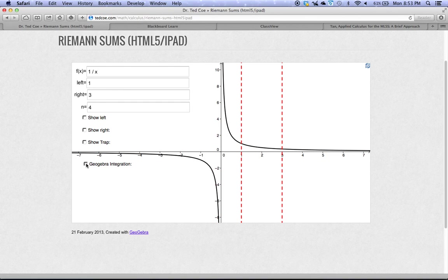And the computer is going to do something that we haven't learned how to do yet, but we'll learn in Lesson 6.4. And it's going to be able to calculate the exact area under the curve. This gray region is all filled in. And it comes out to be a little higher than 1, 1.09861 is a rounded-off answer.